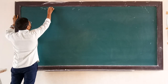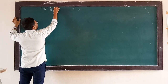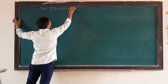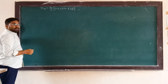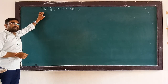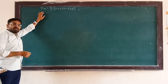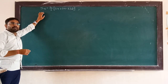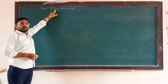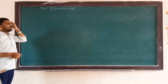Sn is equal to n upon 2 bracket 2a plus n minus 1 times d. This is the formula for the sum. Last time we studied the formula for the term: Tn is equal to a plus n minus 1 multiplied by d. Here we added n upon 2 and also multiplied with 2a.